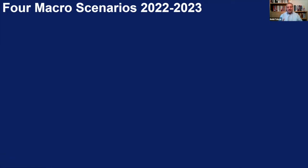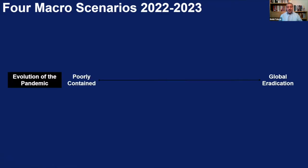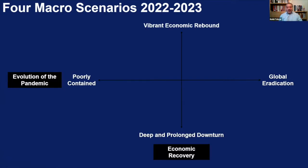We're using a typical driving force model of scenario planning, where you try to identify the forces that could have the greatest impact and around which there is the most uncertainty. We chose firstly the evolution of the pandemic — a fairly obvious one — with a spectrum ranging from a poorly contained pandemic through to global eradication.